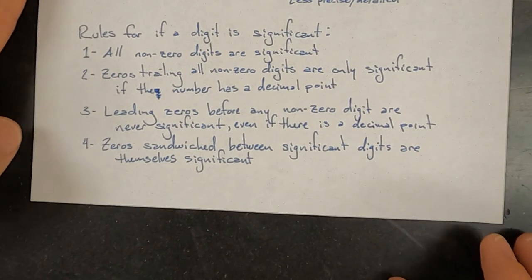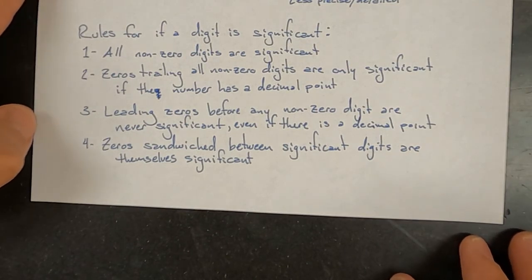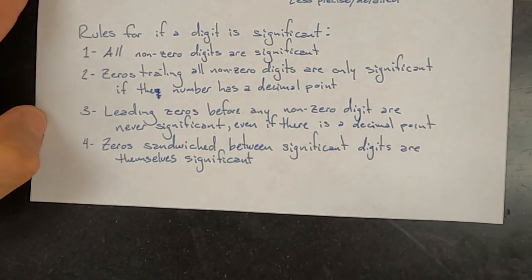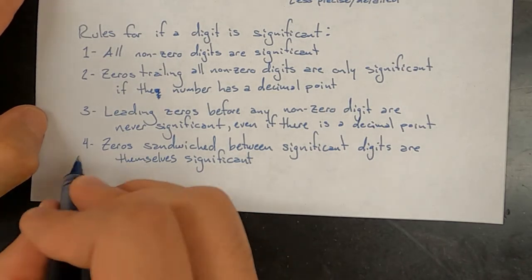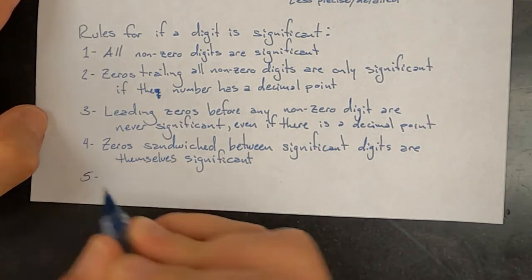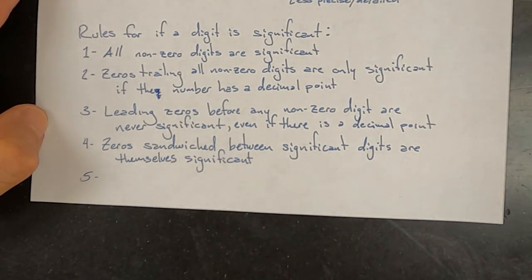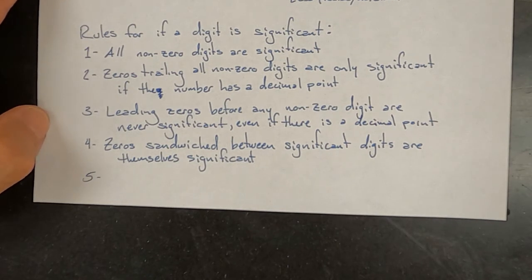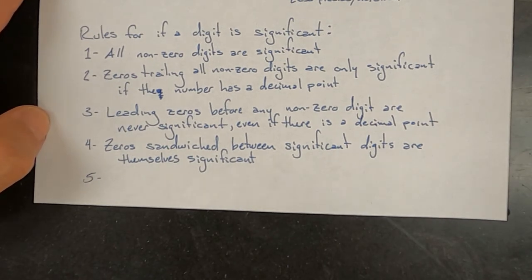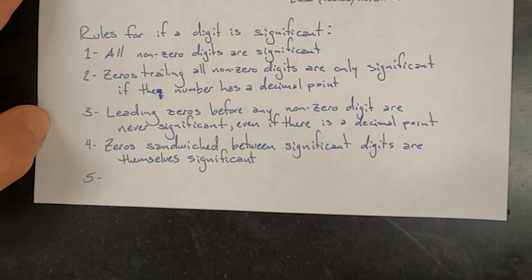The last rule deals with numbers that were counted, or exact numbers. How many sig figs are in a number is a reflection of how detailed that measurement is. If you are counting a number of people and you count 10 people, you know that is an exact number — it is infinitely precise. So a counting number is considered to be infinitely precise.